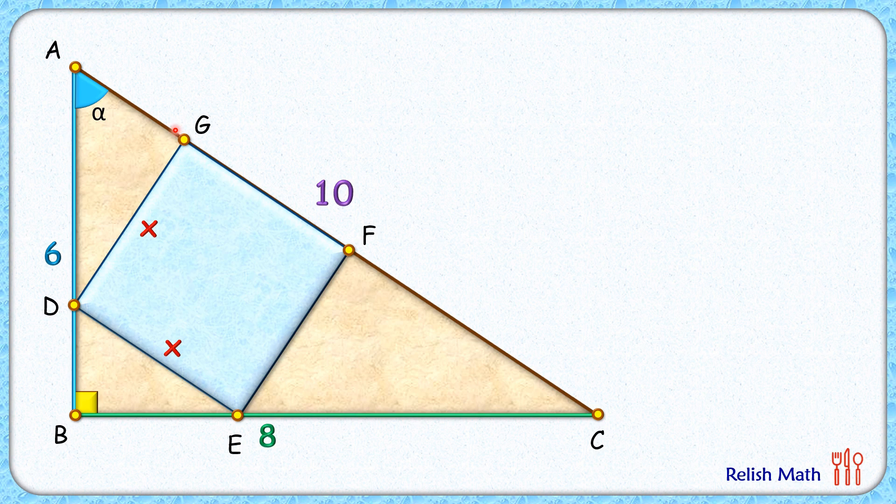As this is a square, this angle G here is 90 degrees. Now if we check the triangle ADG, it has got angle alpha and 90. Also the full big triangle ABC has got angle alpha degrees and 90 degrees. Thus both triangles are similar by AA similarity and thus the ratio of corresponding sides will be equal.